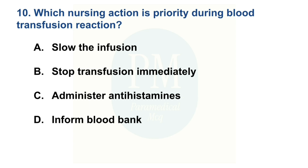Which nursing action is priority during a blood transfusion reaction? Option A: Slow the infusion. Option B: Stop transfusion immediately. Option C: Administer antihistamines. Option D: Inform blood bank. The correct option is Option B — Stop transfusion immediately.